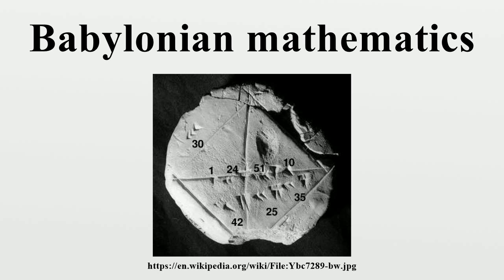Babylonians modeled exponential growth, constrained growth, and doubling time, the latter in the context of interest on loans. Clay tablets from c. 2000 BCE include the exercise: given an interest rate of 1/60th per month, compute the doubling time. This yields an annual interest rate of 12/60ths equals 20 percent, and hence a doubling time of 100 percent growth divided by 20 percent growth per year equals 5 years.